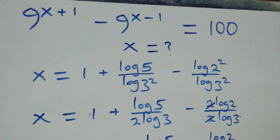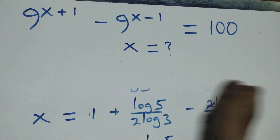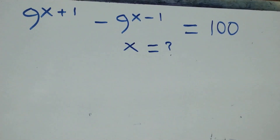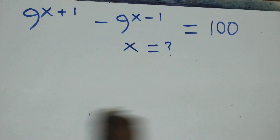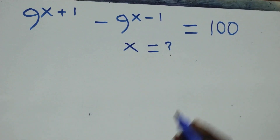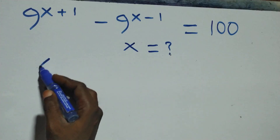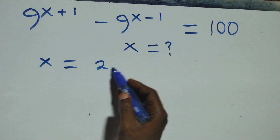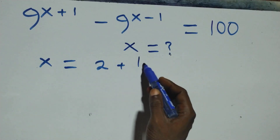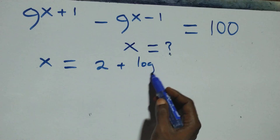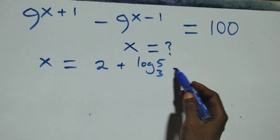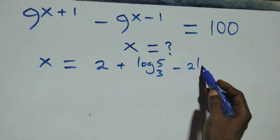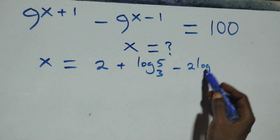The next step: we bring this together as one fraction. We have x equals to 2 plus log 5 base 3 minus 2 log 2 base 3, all over 2. That is the value of x. Let's check if this satisfies the given problem — that is, we substitute the value of x which is x equals to 2 plus log 5 base 3 minus 2 log 2 base 3, all over 2.